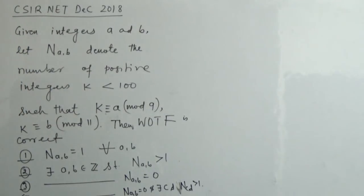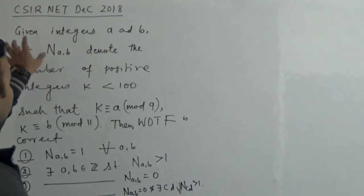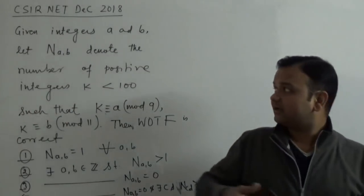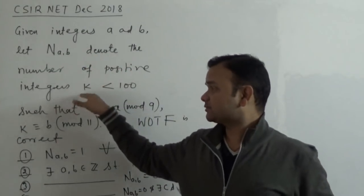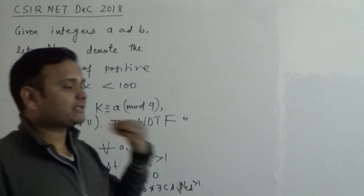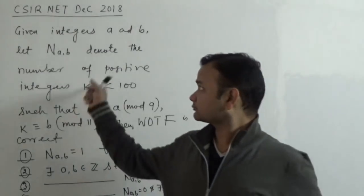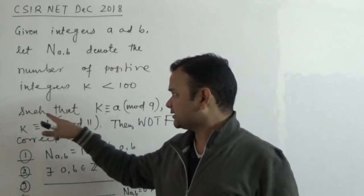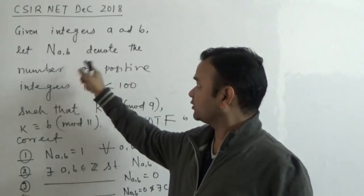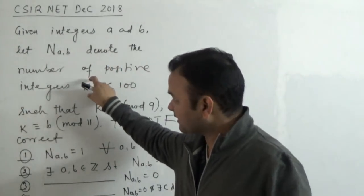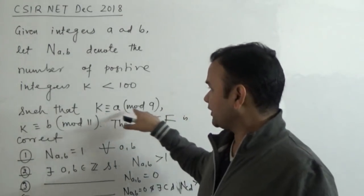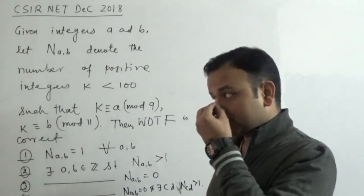So let's first understand the question — what does the question exactly say. Given integers a and b, N(a,b) denotes the number of positive integers k less than 100 such that k is congruent to a mod 9 and k is congruent to b mod 11.